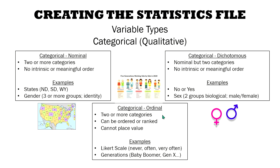And then finally, a categorical variable that's ordinal has two or more categories that can be ordered or ranked. You cannot place numerical value on them, but they can be ordered or ranked. If you place value on them, then we may be looking at some type of continuous variable. For example, a Likert scale — researchers may argue it could be considered continuous, however technically it's a categorical ordinal variable: never, often, very often — they're categories in a ranked order. Generations — baby boomer, generation X, and so on — they're categories but in a specific order.